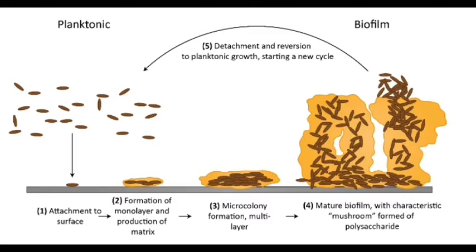In these stages, the formation of microcolonies takes place, exhibiting significant growth and cell-to-cell communication such as quorum sensing. The biofilm grows in a 3D manner and attachment becomes irreversible. In the last stage, some cells of the mature biofilm detach and disperse into the environment as planktonic cells, potentially starting a new cycle of biofilm formation.